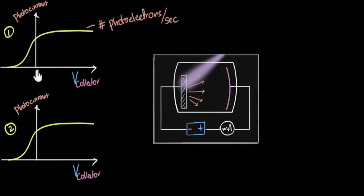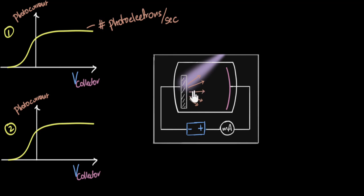When we make the voltage on the collector negative, by say flipping the battery, the collector starts repelling the electrons, and so electrons start going back. As a result, the current starts reducing, and eventually it stops. At this point, even the fastest, most energetic electrons have also stopped — they're not able to make it. And therefore this negative voltage is what we call the stopping voltage, or the stopping potential.